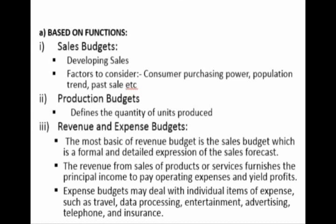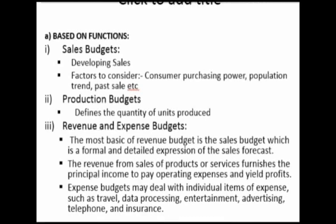The second classification of budget based on functions is the production budget. The production budget lays down the quantity of units to be produced during a particular period of time. The main purpose is to maintain an optimum balance between sales, production, and inventory. Factors to consider while preparing this budget include plant capacity, production stability, availability of materials and labor, and time.